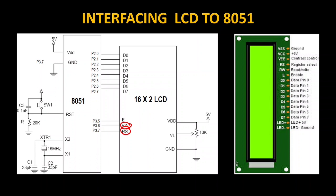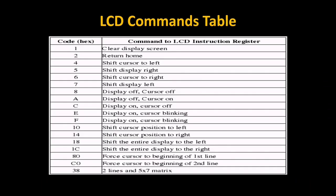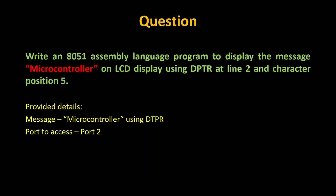We activate the corresponding pin so that data flows. These are the LCD commands we use most widely: 0x38, 0x0E, 0x01, 0x06, 0x80, and 0xC4. The question is to write an assembly language program to display the message 'MICROCONTROLLER' on the LCD screen using the data pointer, starting at line 2 character 5. For line 2, the command value is C4, which selects the second line and character position.